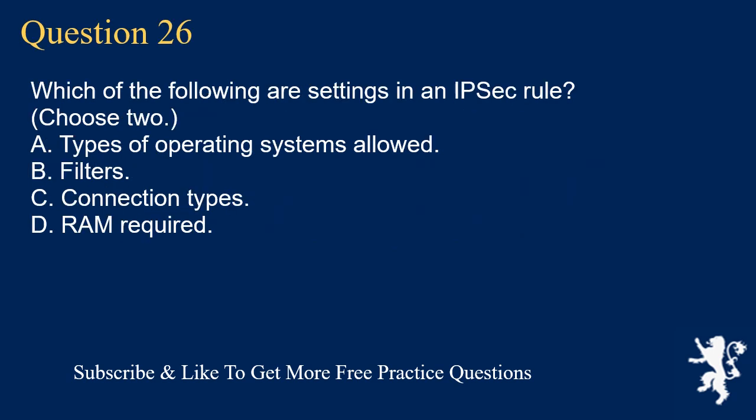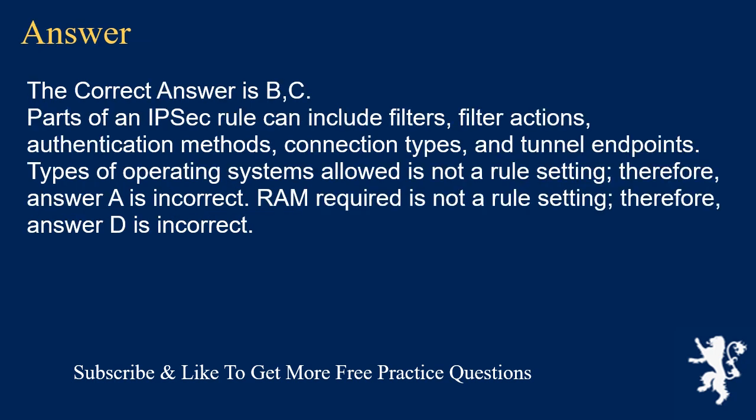Question 26. Which of the following are settings in an IPsec rule? Choose 2. A. Types of operating systems allowed. B. Filters. C. Connection types. D. RAM required. The correct answers are B and C. Parts of an IPsec rule can include filters, filter actions, authentication methods, connection types, and tunnel endpoints. Types of operating systems allowed is not a rule setting. Therefore, answer A is incorrect. RAM required is not a rule setting. Therefore, answer D is incorrect.